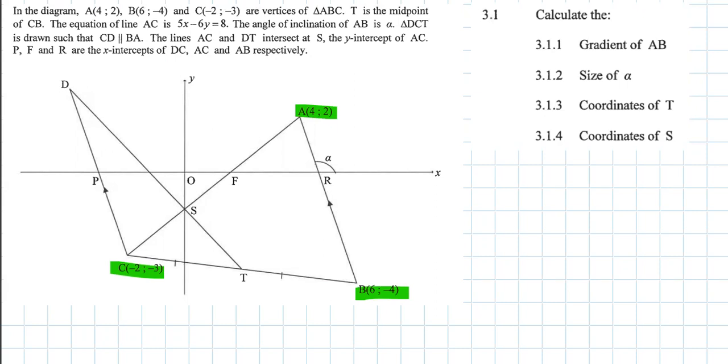T is the midpoint, so that means CT and TB are equal to each other. The equation of the line AC is given. We've been given the angle of inclination alpha for line AB. Triangle DCT is drawn with parallel lines CD parallel to AB, and the lines AC and DT intersect at S, so there's a point of intersection at S.